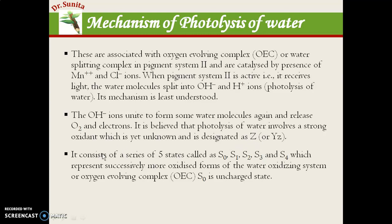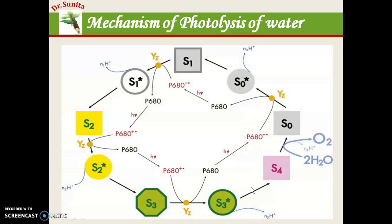This strong oxidant is described in five states: S0, S1, S2, S3, and S4. This numbering represents the oxidized form of the water-oxidizing system, or water oxygen-evolving complex. S0 means it is in an uncharged state; S1 means it has 1 charge; S2 means 2 charges; S3 means 3 charges; and S4 means 4 charges. So there are 5 states in the photolysis of water.